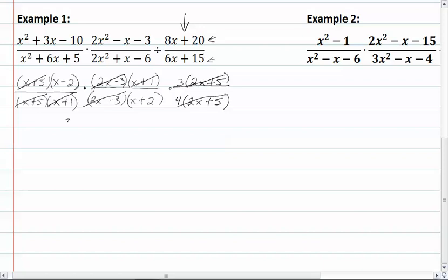That will leave us with 3 times x minus 2, all over 4 times x plus 2, and we're done.